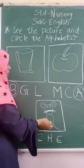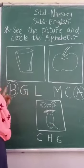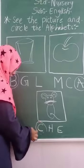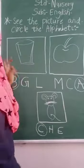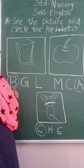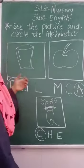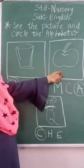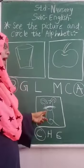The last picture is Cat. Cat comes from C. This is C. You have to circle C for Cat. All of these come from C. So: B for Bucket, A for Apple, C for Cat.